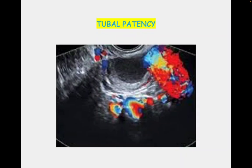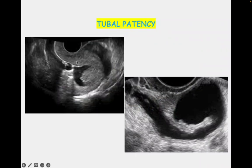The disadvantages include tubal spasm — when putting the fluid, tubal spasm can occur, which may lead to a false impression that the tubes are not patent and are blocked, just like with HSD. Another disadvantage is that we cannot determine which side has the tubal blockage. If fluid appears in the pouch of Douglas, it means both tubes are open, but we cannot determine if one side — right or left — is specifically blocked.